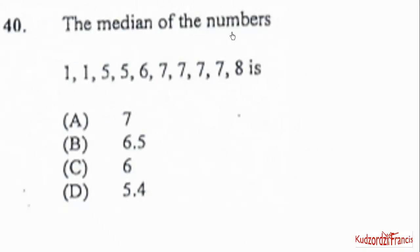The median of the numbers is, so we know median is the middle number when we arrange in order of magnitude. So we can see that all this has been arranged for us already. And we have 1, 2, 3, 4, 5, 6, 7, 8, 9, 10 items. So it means the 5th and the 6th item will be the median. The average of the 5th and the 6th item.